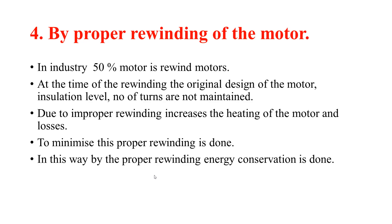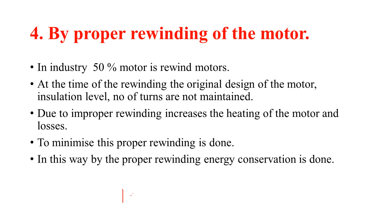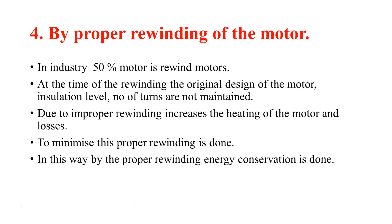If you have poor winding where the insulation level is poor, losses increase and energy is wasted. To reduce losses, you must maintain proper insulation level, wire size, and number of turns according to the original design. By using the correct new design and implementing proper rewinding, losses are reduced and energy conservation is achieved.